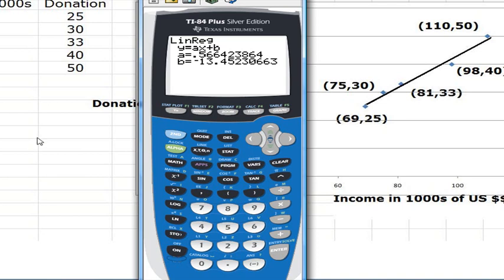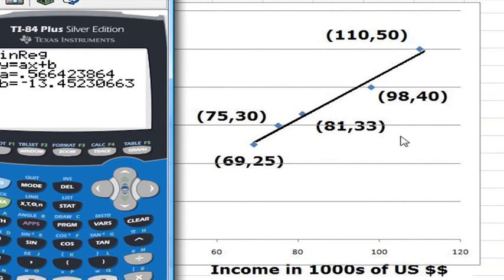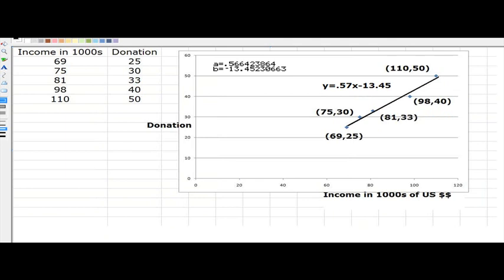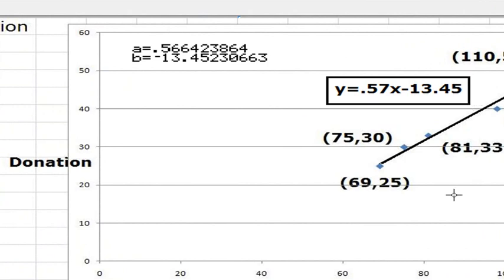We would be confining ourselves to the values that come into this region. So according to this, what we have is that the equation of the line of best fit is y equals 0.57x minus 13.45.